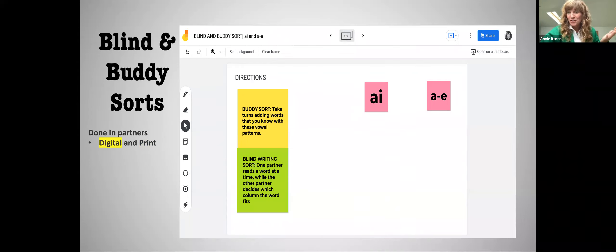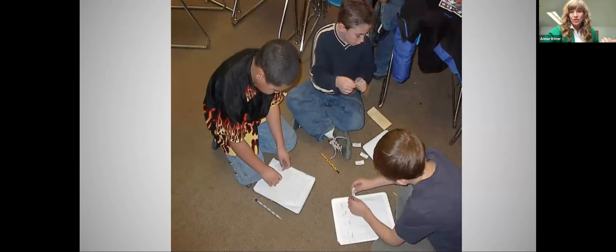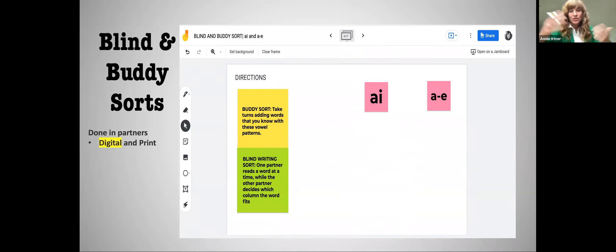Another digital option for doing blind and buddy sorts is using Jamboard. This is something that I certainly started using a lot in my classrooms last year and can be done again from kindergarten up into the older grades. So you can ask students each individually to take a page or have them sort based on words that you've already brought up on the resource for them. So these are just some kids doing Jamboard.